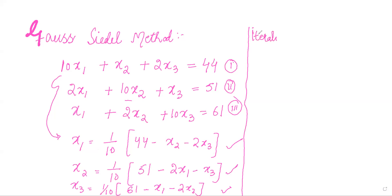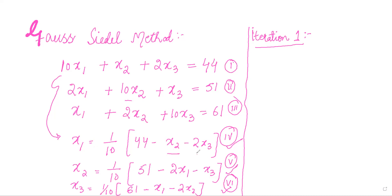Let us begin iteration 1. In iteration 1, let me label the iterative equations as equation 4, equation 5, and equation 6. I will take equation 4 and find the value of x1 while assuming values for x2 and x3.